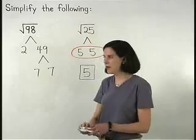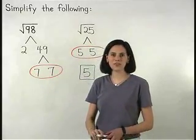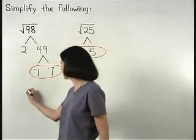So we have a pair of 7s in our factor tree. This means that a 7 can come out of the radical.